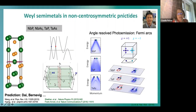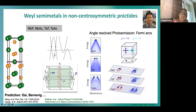In niobium phosphide, a calculation from Binghai shows that in this compound many of the Weyl points are slightly above the Fermi energy, but more or less in every Weyl semi-metal we have this situation. In very rare cases like Dirac semi-metals like graphene, you only have the Weyl points close to the Fermi energy. Most of the time this is simply a question of the band dispersion and band structure.